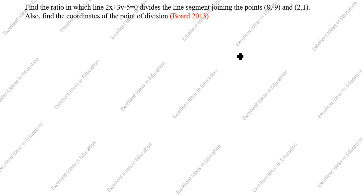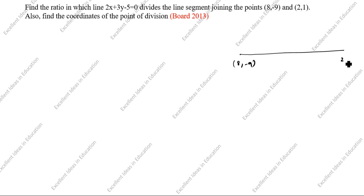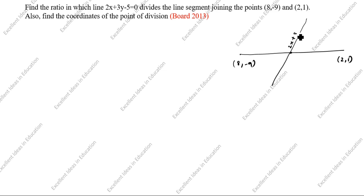So, joining the points — what are the parameters given? We are given this is 8 comma minus 9, and this is 2 comma 1. So, the line segment is divided, and what is given is 2x plus 3y minus 5 is equal to 0.